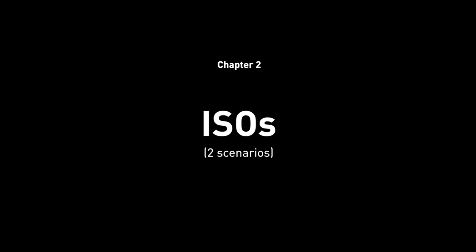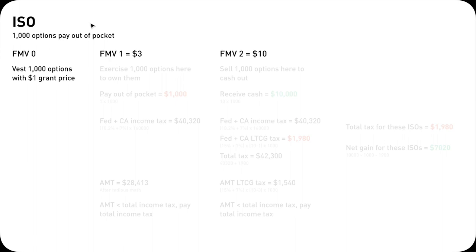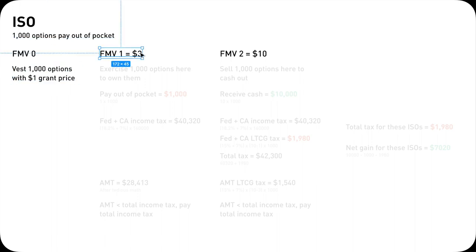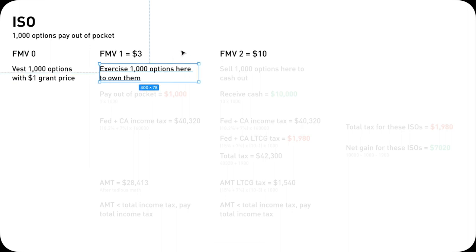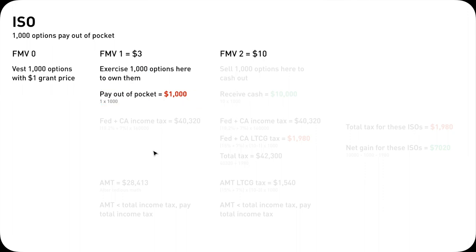Now let's get more advanced in chapter 2: ISOs. How does it work? With ISO, there's only one way to exercise — you have to pay money out of your pocket. We will use the same amount of options: 1,000. Same grant price: $1. At fair market value of $3, say you exercise 1,000 options. The exercise cost is the same: $1,000.